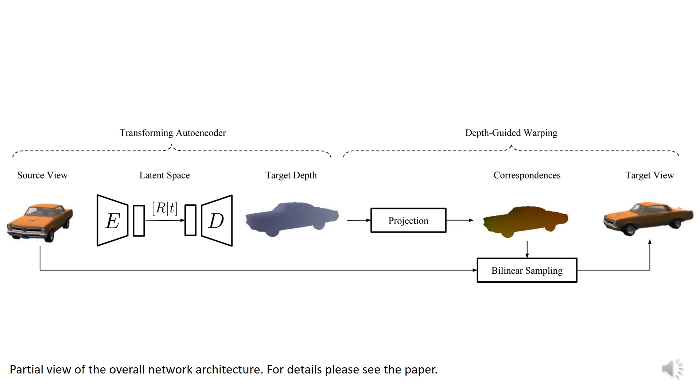Our main contribution is a simple yet effective depth branch in a deep-learning-based novel view synthesis pipeline. The source view is first encoded into a latent code. A transforming autoencoder-like approach encourages the latent code to be meaningful in 3D metric space.